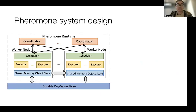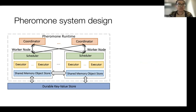I'd like to show the system design of Pheromony. Pheromony runs atop a Kubernetes cluster and has two kinds of nodes: the coordinator and the worker. In each worker, we run a local scheduler and a number of function executors. We also have a local object store in each worker node. All system components are deployed as containers.